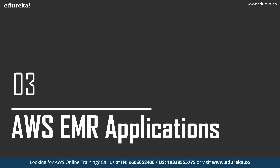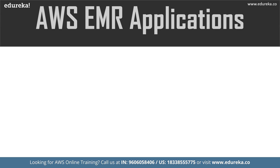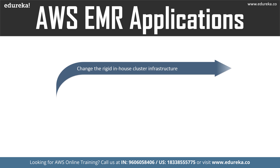Now let us talk about the AWS EMR applications. The first application is changing the rigid in-house cluster infrastructure. Running the same complete cluster infrastructure any time you need to analyze big data, no matter what the terms of analysis are, is a waste of resources. Unless you have managed to configure elastic clustering on your machines, EMR is more resource efficient.